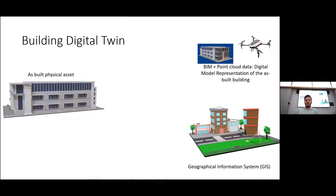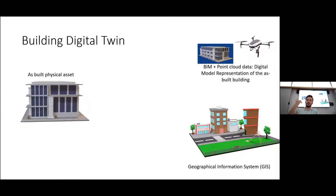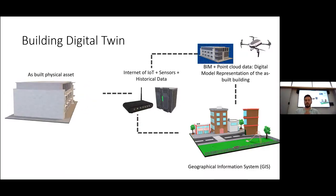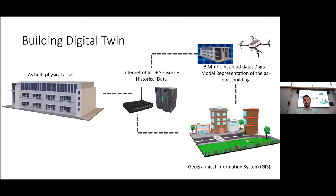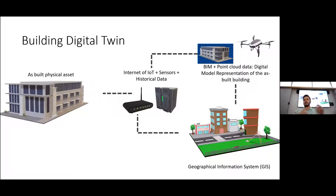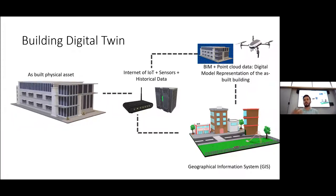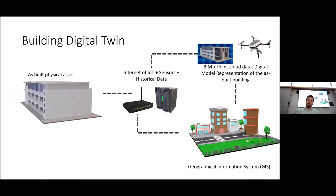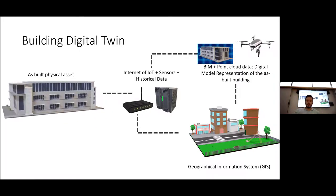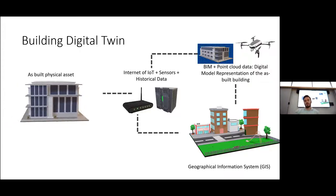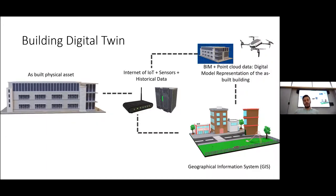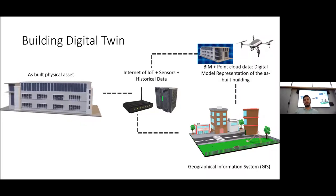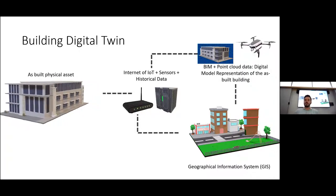Up to this point we still just have a BIM model. What transforms it into a digital twin is connecting it with sensors and the Internet of Things — devices connected to a network. We already have this in smart homes: a washing machine that tells you when laundry is ready. That connectivity is a key point in digital twin technology. We also need historical data — maybe 10 years of building operation data — to include for visualization or prediction analysis.